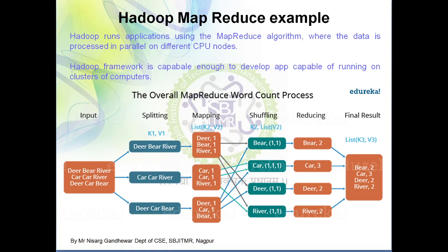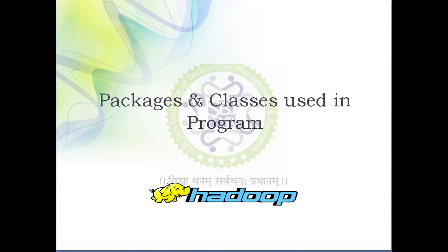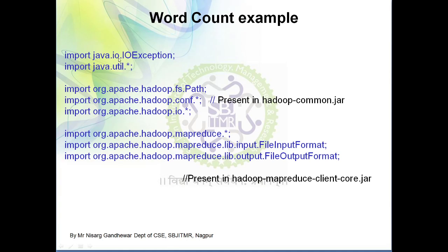Now we will understand the Hadoop MapReduce word count program in Java — specifically what packages and classes are required. We need import java.io and util, plus three packages from hadoop-common.jar: hadoop.io, which is responsible for input and output operations; hadoop.configuration, used to set the configuration for the word count program; and fs.path, used to set the input and output paths.